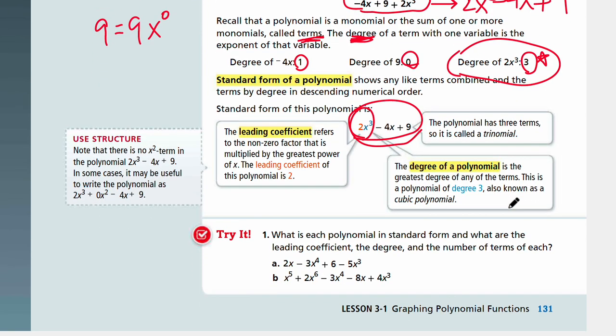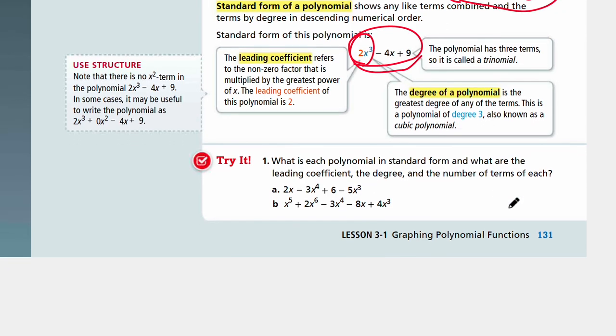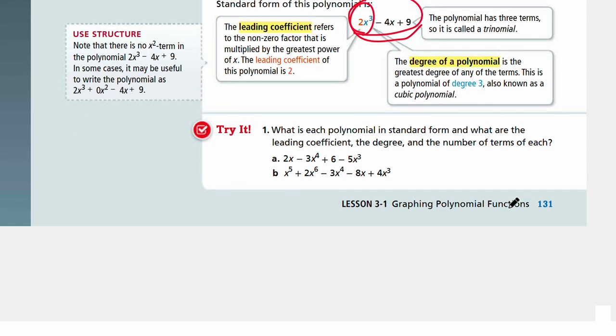So let's look at try number 1. What is each polynomial in standard form, and what are the leading coefficient, the degree, and the number of terms of each? Look at the polynomial, write them in standard form, and identify leading coefficient, the degree, and the number of the terms. Pause the video, and come back when you're ready for answers.